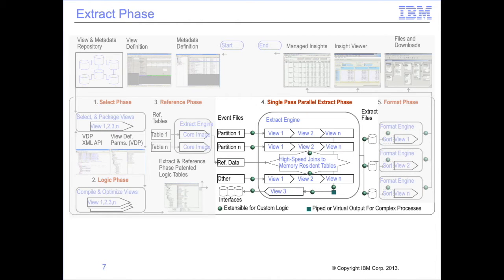The extract phase begins by loading the VDP, extract phase logic table, and reference data from disk. It then uses a logic table to generate machine code for each thread, each input file partition. It then opens input and output files and executes these threads in parallel. Each event file record is read and processed through the logic table, performing joins and writing selected data to output extract files.